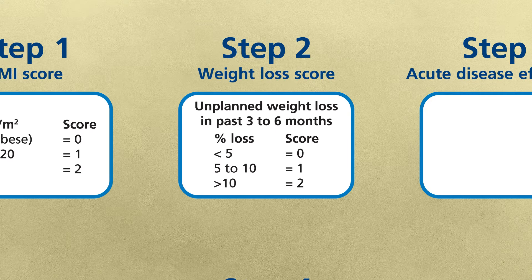Step two is their weight loss score. This gives us a score for the amount of unintentional weight loss for your patient. You will need your patient's current weight and their heaviest weight from their weight history over the last three to six months. If your patient has lost less than five percent of their weight this will score a zero for step two. If they have lost between five and ten percent this will score a one, and over ten percent weight loss will score a two for step two of the MUST tool.